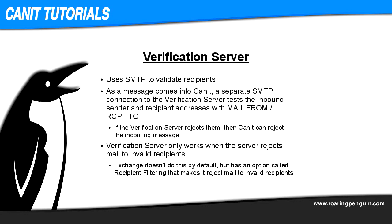The most common method for recipient verification is to use a verification server. As each message is delivered to CANET, it connects to the verification server and uses SMTP commands to test the sender and recipient address. If the server rejects them, then CANET can reject the message. The verification server is almost always the same SMTP server as the backend mail server to which CANET delivers good mail. It's important to understand that the verification server must reject mail to invalid recipients in order for recipient verification to work. Exchange, for example, does not reject mail to invalid recipients by default, but it can be made to do so. In Exchange, this is a feature called recipient filtering.